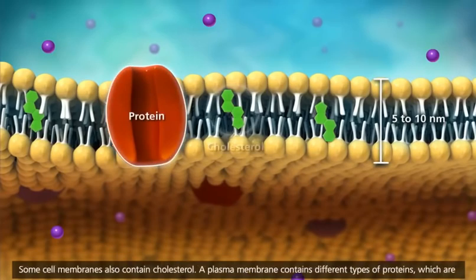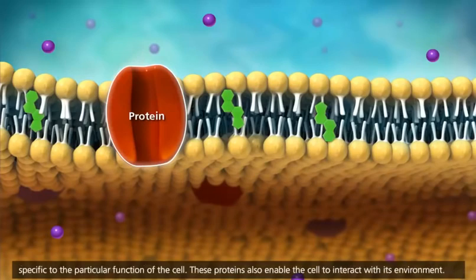Some cell membranes also contain cholesterol. A plasma membrane contains different types of proteins which are specific to the particular function of the cell.